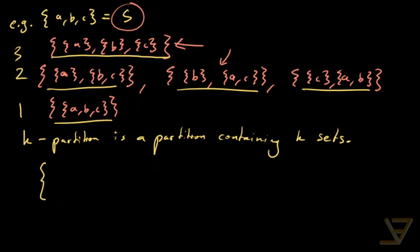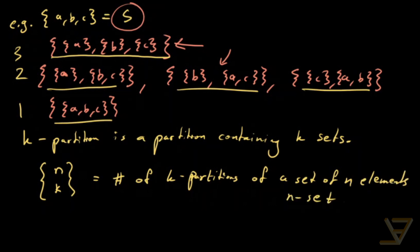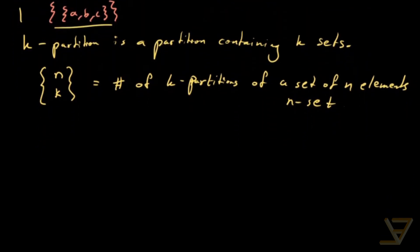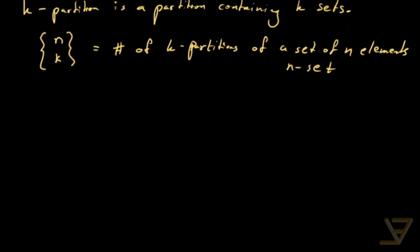We're going to denote by N split K - that's what I call this, I don't think it's standard. N split K is the number of k-partitions of a set of N elements, otherwise known as an N-set. So let's do a couple of computations. I'm not going to show exactly how these are done because I'll give a more general formula at the end.